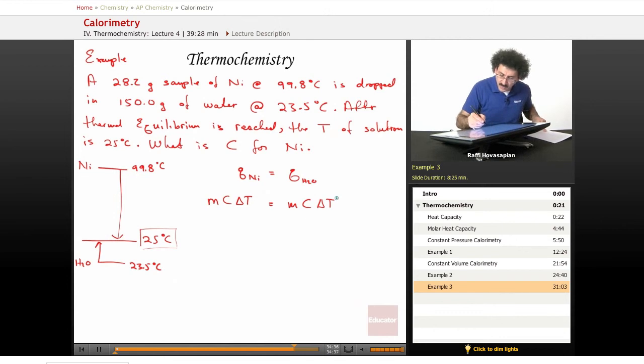Let's go ahead and put our values in. We have 28.2 grams of nickel. We're looking for C. That's what we want. And delta T is 25 minus 99.8. I don't know if I should do it this way or not. That's fine.